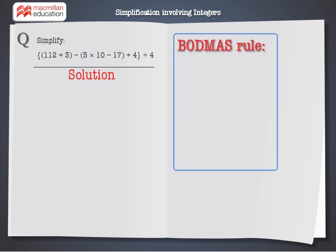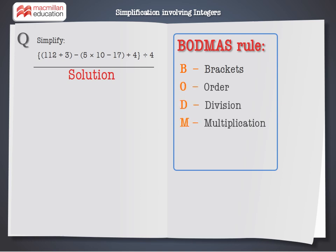We have to use BODMAS rule in this simplification. The order of operation should be: first simplify B for brackets, then O for order, then D for division, then M for multiplication, then A for addition, and finally S for subtraction. Let's first simplify the brackets.